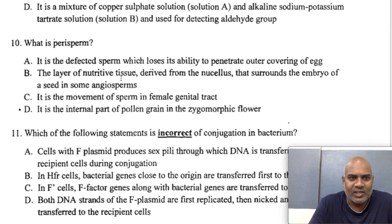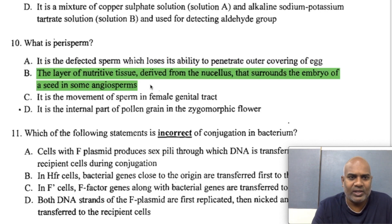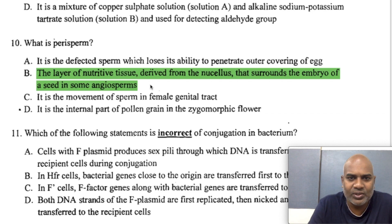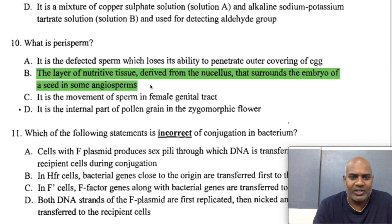The answer is B. The layer of nutritive tissue derived from nucellus that surrounds the embryo of seeds in some angiosperms — the answer is B, referring to the perisperm, which is a layer of nutritive tissue derived from the nucellus surrounding the embryo.